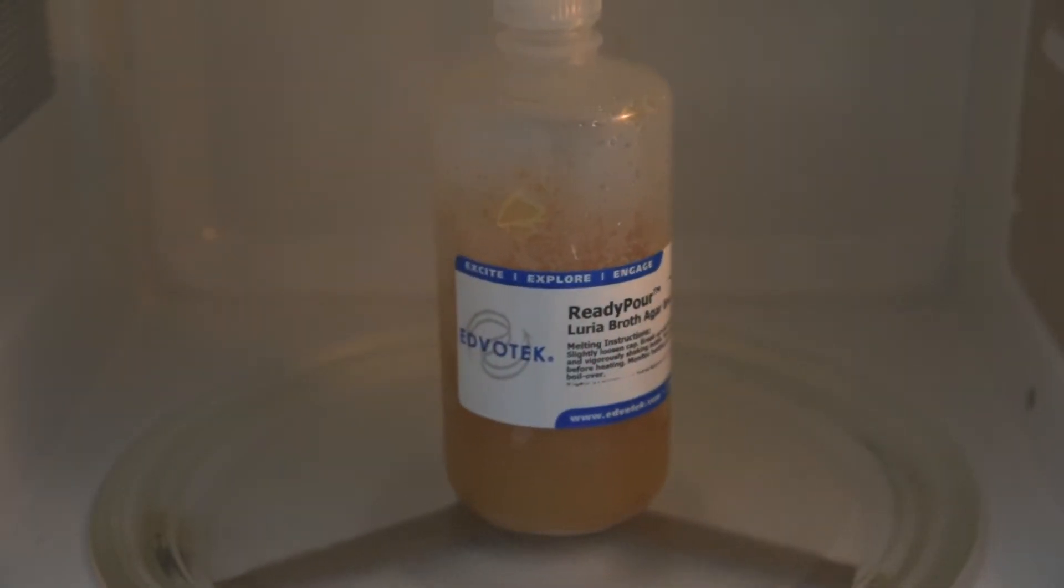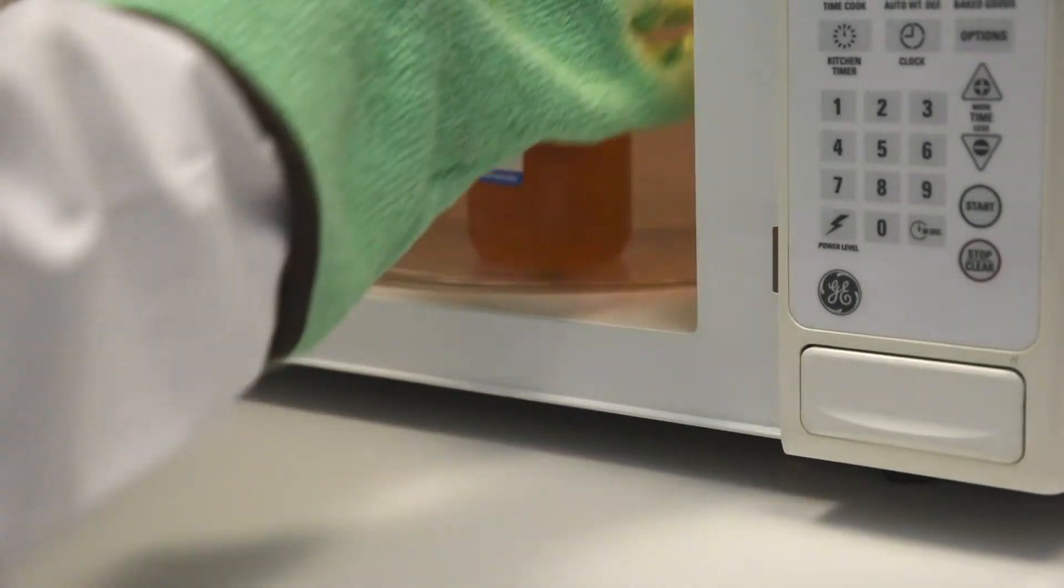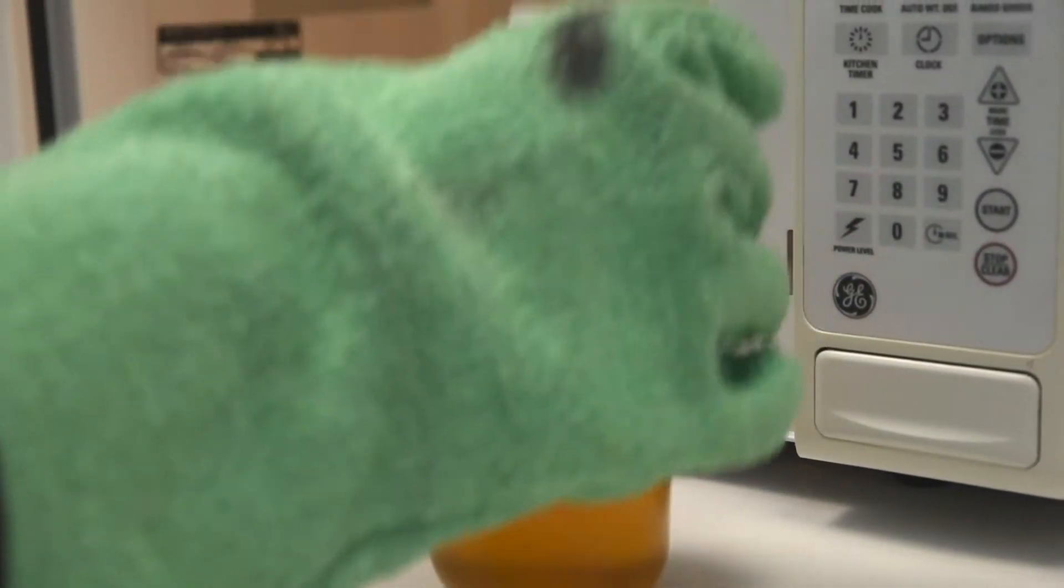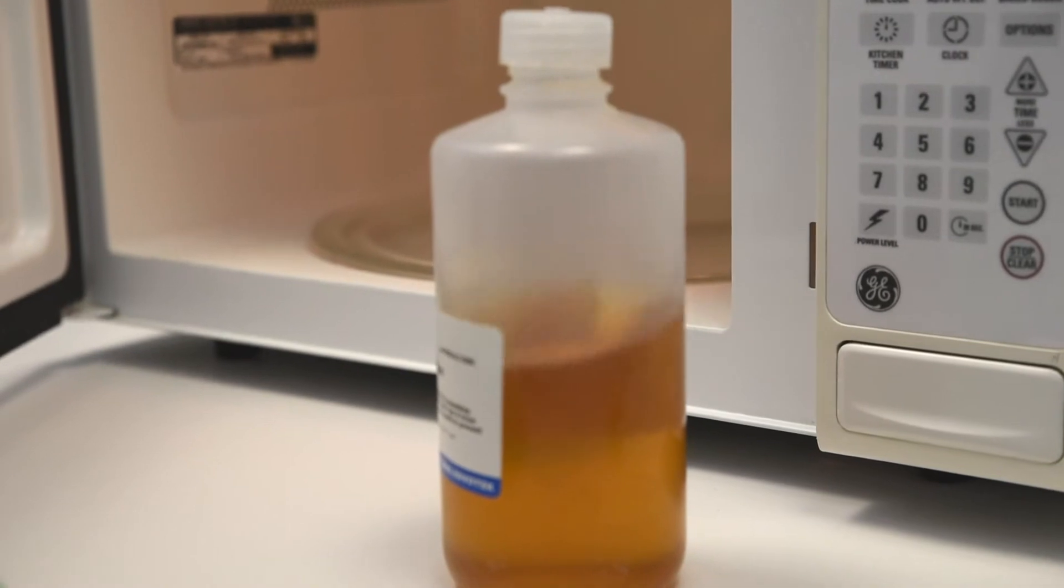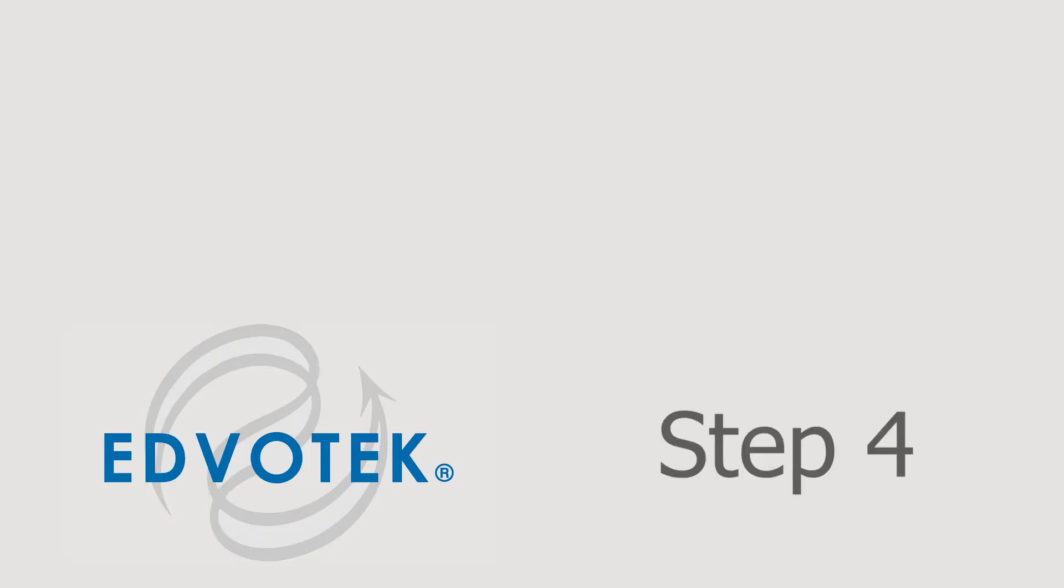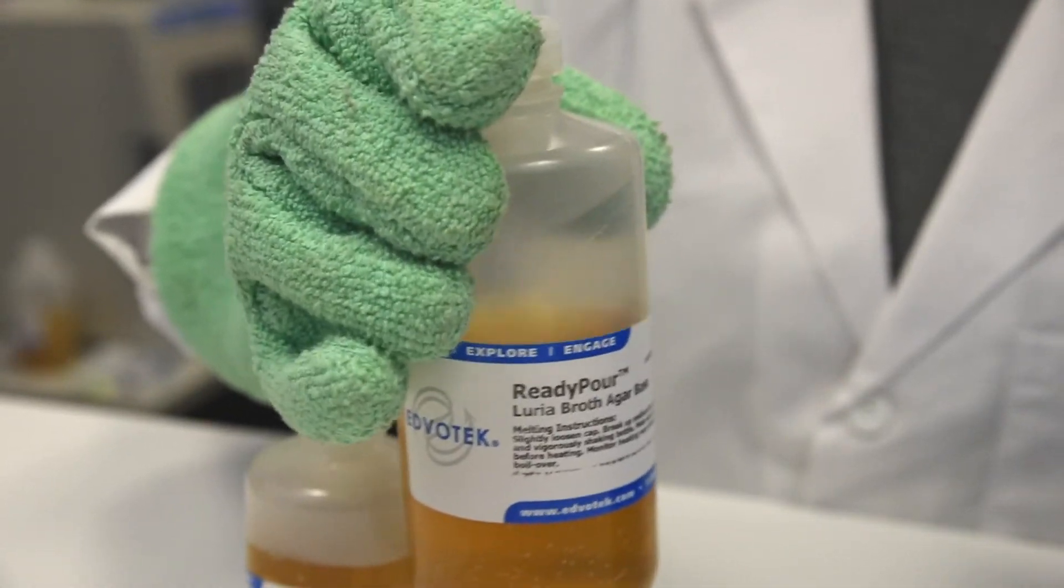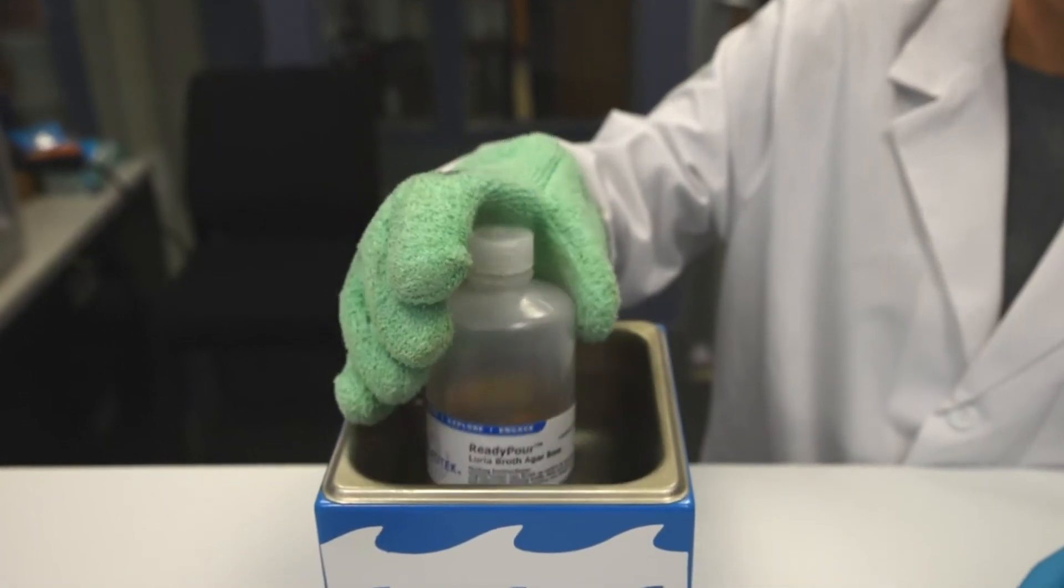Repeat these steps with the large bottle. Use extra care and make sure the agar does not boil out of the bottles. Pay close attention and stop the heating when the liquid starts to bubble up. Step 4: Cool the bottles of ready pour agar to 60 degrees Celsius with gentle swirling to promote even dissipation of heat.